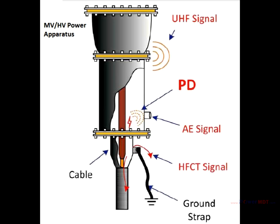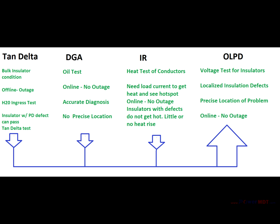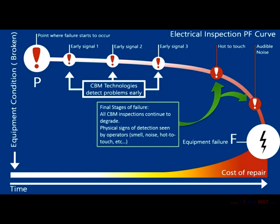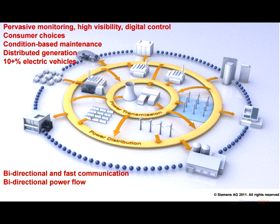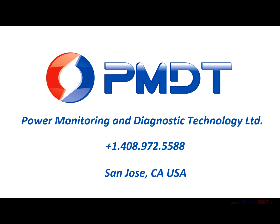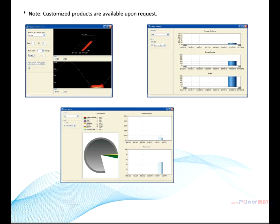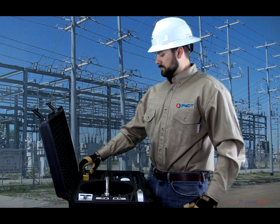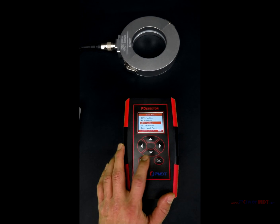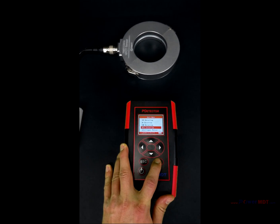The information from online PD testing is becoming increasingly vital to asset managers in the transmission and distribution industry, which faces many challenges including more stringent reliability requirements and the tightening of maintenance budgets. PMDT provides the diagnostic solutions, field testing services, and the education and training necessary to meet these challenges.